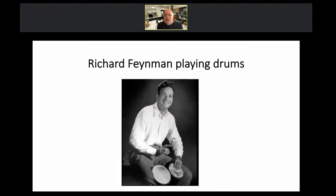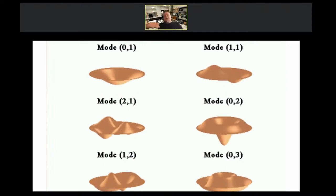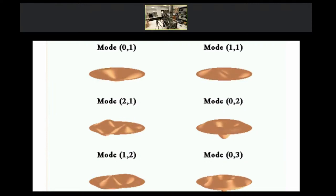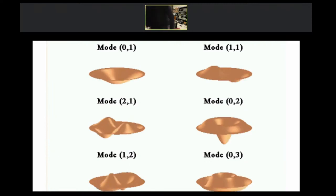What happens when we think about a drum? Here's Richard Feynman — he loved playing bongo drums. When we take a drum, we can excite different types of modes. If I hit the drum in the middle or on the edge, you generate different types of modes. I have a hand drum here, and depending on where you hit it, you can generate different types of sound. This is very much like the guitar but in two dimensions.